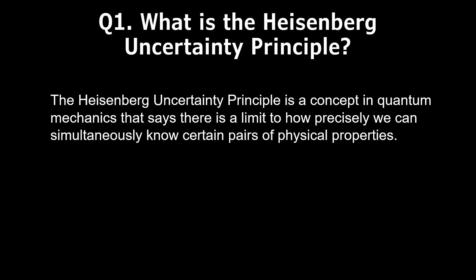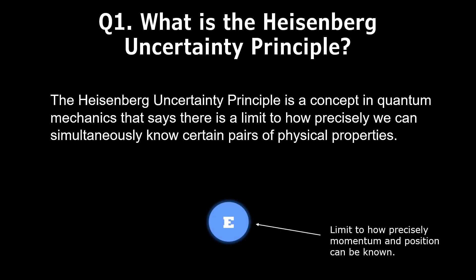The Heisenberg Uncertainty Principle is a concept in quantum mechanics that says there is a limit to how precisely we can simultaneously know certain pairs of physical properties, such as the position and momentum of an electron. You can't precisely know both the position and momentum of an electron.